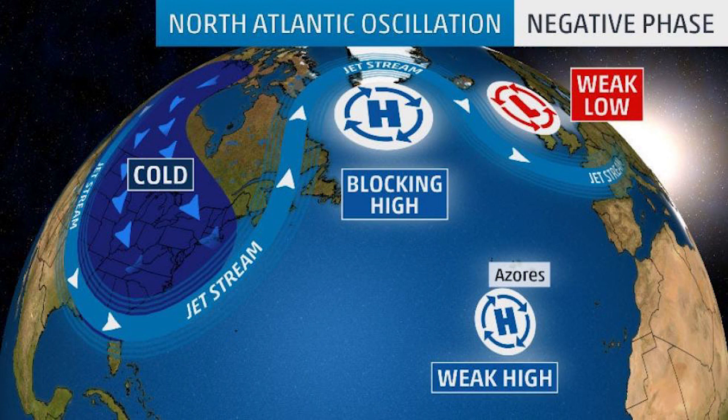Last year we saw the opposite — a very fast jet stream that didn't allow it to be very curvy at all; it didn't have many troughs or ridges and was pretty flat. In a negative phase of the NAO we see much more fluctuation in the jet stream with lots of troughs and ridges. That's what can really lead to big troughs in the east and big ridges out in the Atlantic — what we call Greenland blocking — which leads to storm systems traveling right up the jet stream over the east coast. In a negative NAO we have a much bigger chance for big east coast snowstorms.